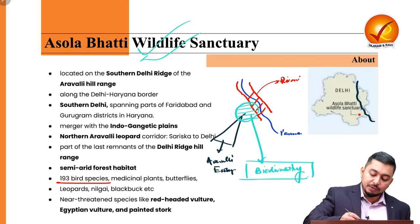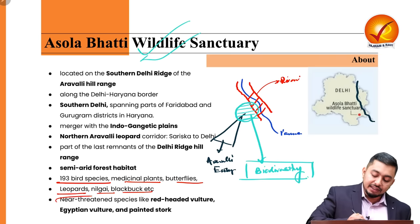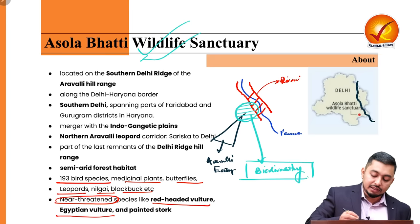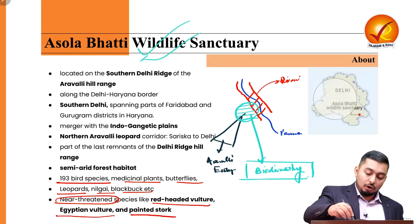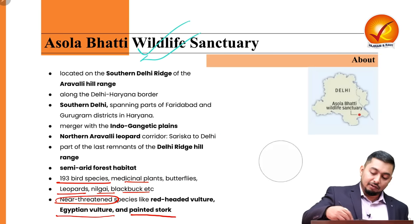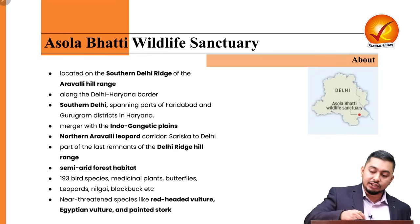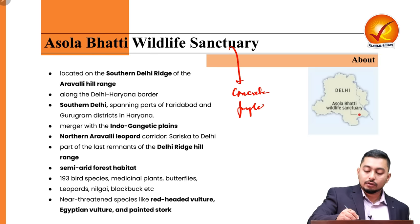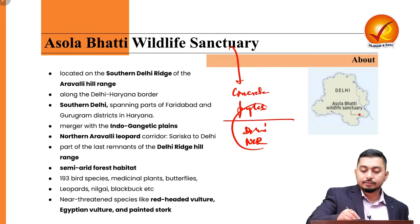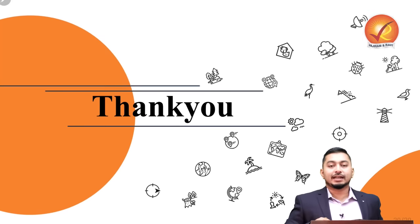The sanctuary has near-threatened species like the red-headed vulture, Egyptian vulture, and painted stork. It is one of the last remnants of the Delhi Ridge — because these are the regions where we have created the concrete jungles of Delhi and NCR. Thank you so much, I hope it helped.